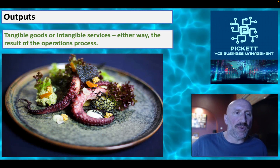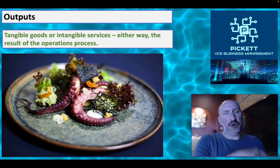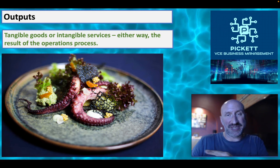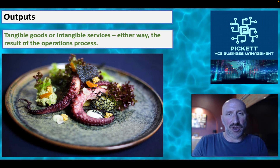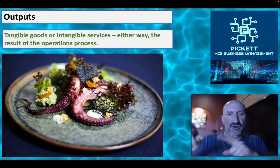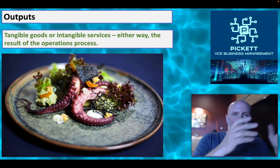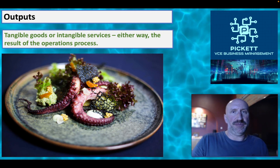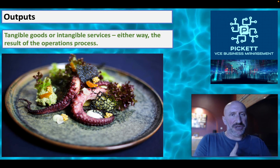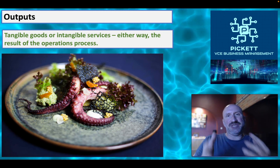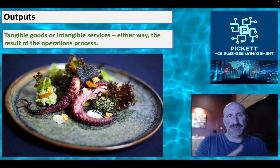Outputs are the most simple one — the tangible good or the intangible service that is the result of the operations process, which is then sold to the customer. So there you have three solid, reliable definitions of each element within the operation system, and with inputs, some examples of different types that might apply. You draw from that list whichever are appropriate or relevant to the particular business you're looking at.